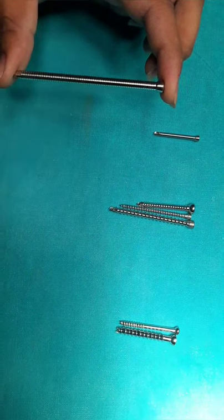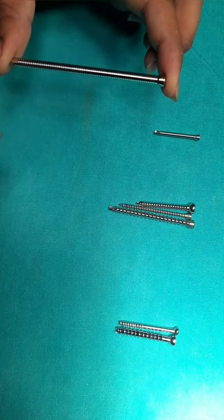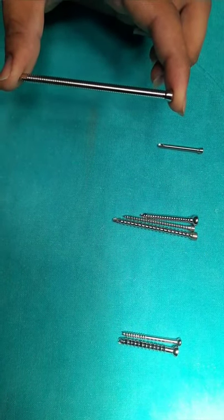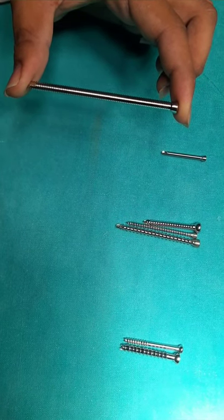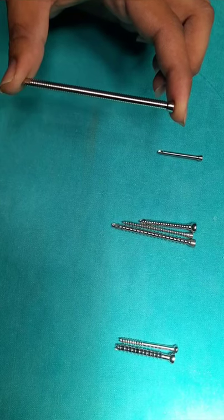1.5 mm cortical screws are used in phalanx fractures. 2.7 mm in metacarpal and phalanges, 3.5 mm in radius, ulna, fibula, and clavicle, and 4.5 mm in humerus, tibia, and femur.